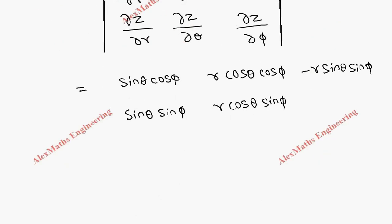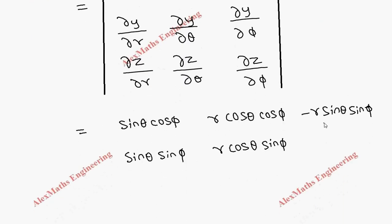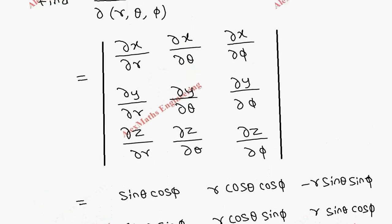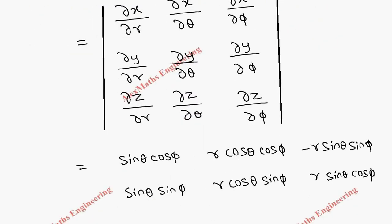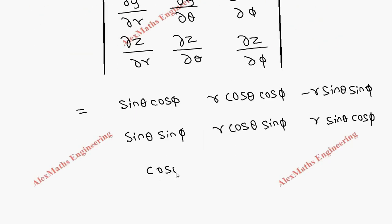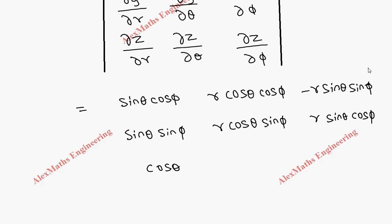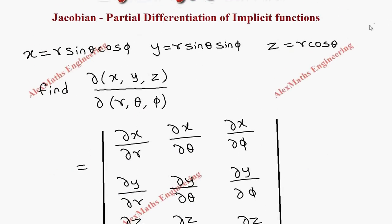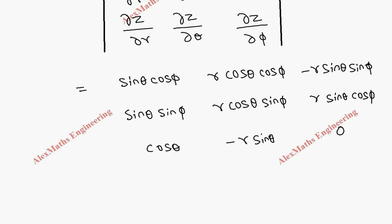For the third row, differentiating z with respect to r: we get cos θ. With respect to θ: cos θ becomes −sin θ, giving −r sin θ. With respect to φ: there is no φ term, so both factors are constant and the differentiation is zero.